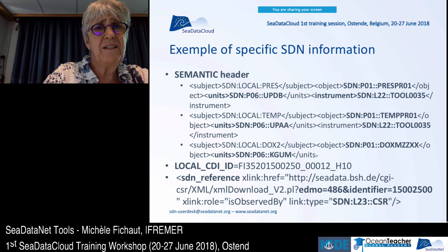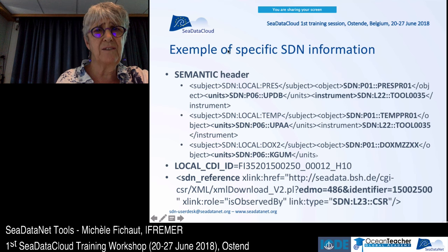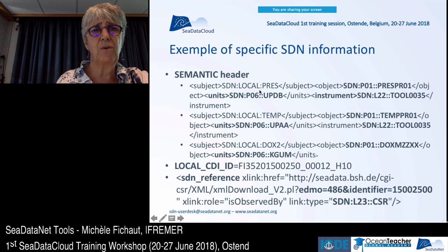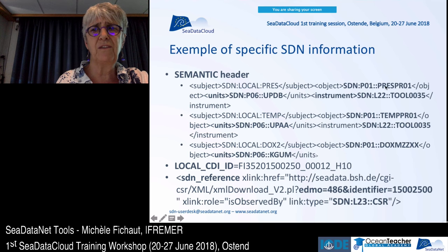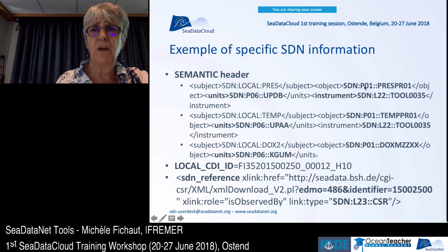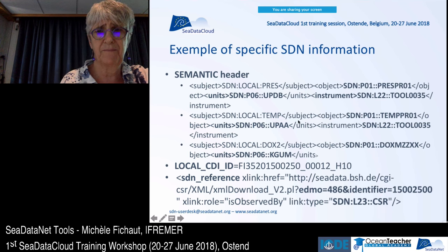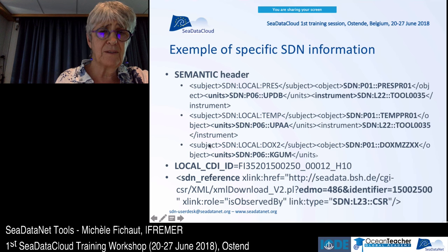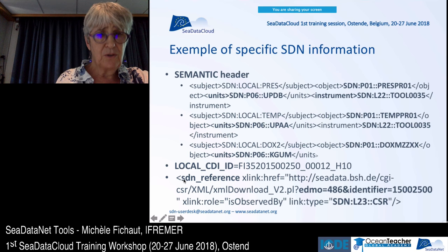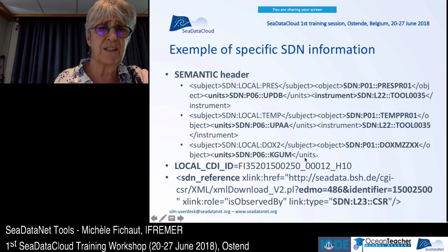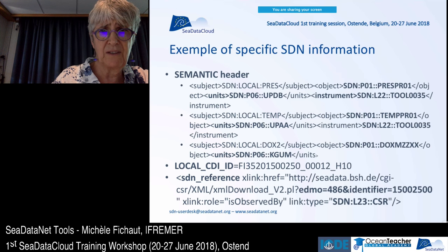This is an example of C-DataNet specific information found in the semantic header of the files, with the mapping of your parameters locally in your files and with the BODC vocabulary for parameters, for units, for instruments. For example, you will have the specific information: a local CDI ID, and also some so-called SDN references, which are linked to other C-DataNet catalogs or vocabularies.